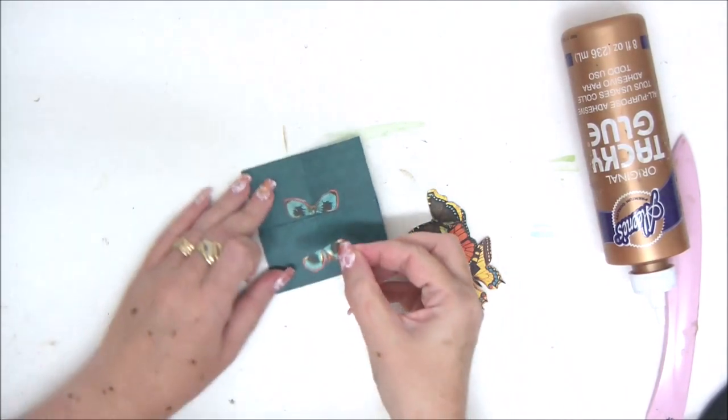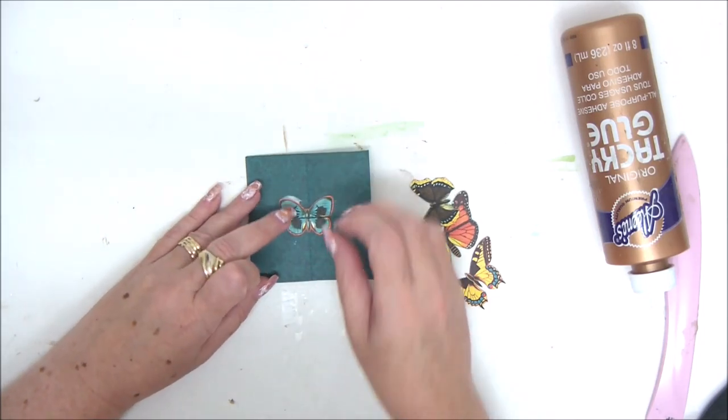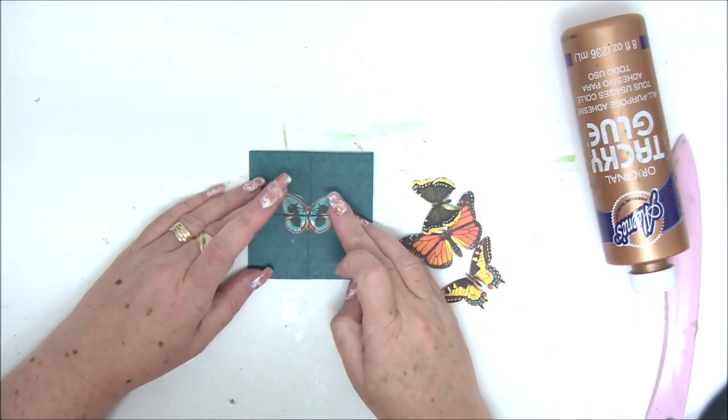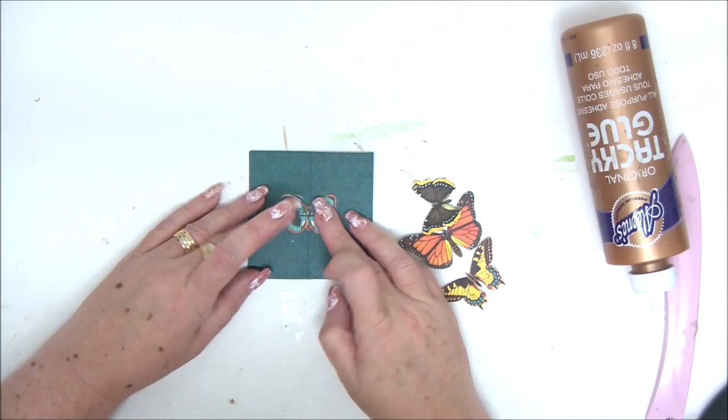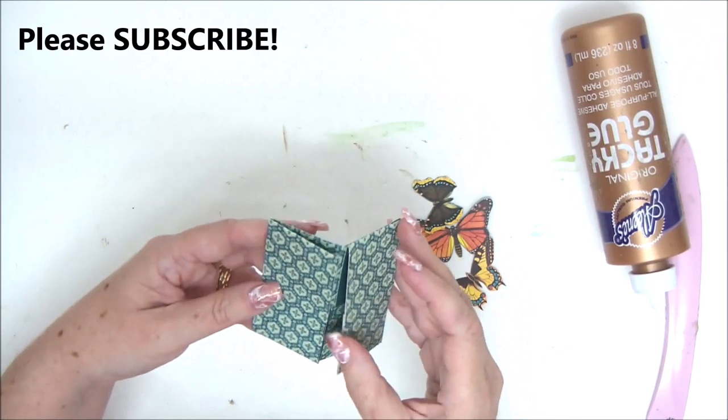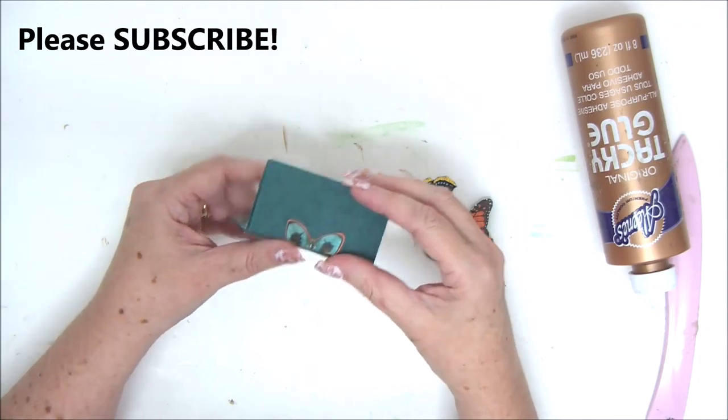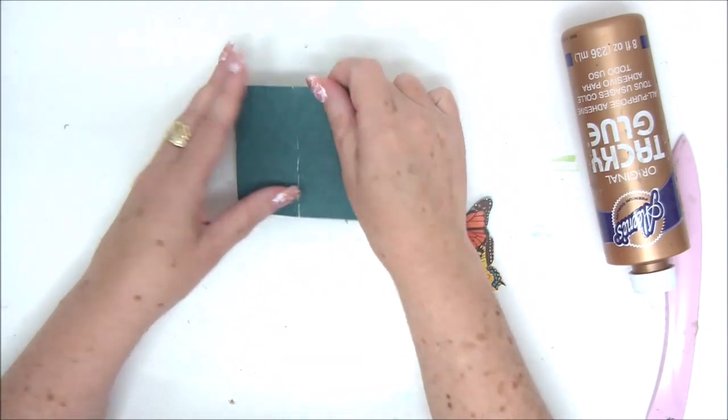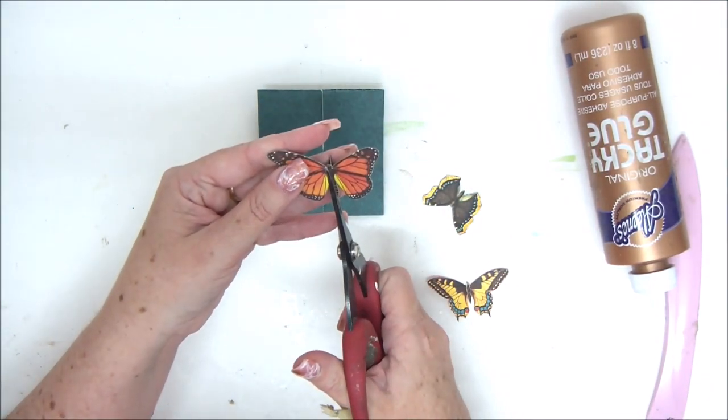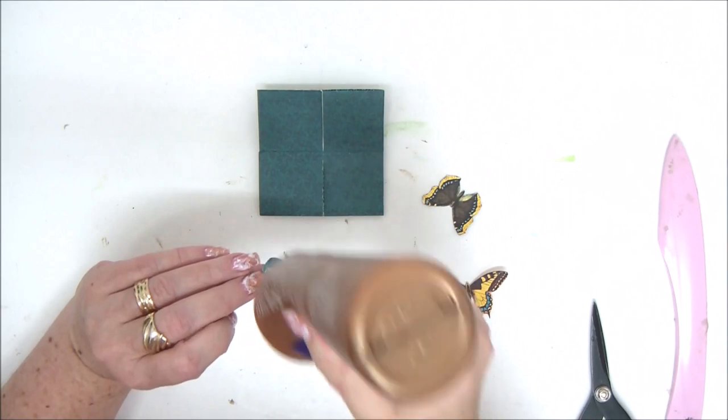So basically you cut the shape in half according to where it's supposed to go. For example this butterfly is horizontal. It's going to go where the card has a horizontal opening. So you cut the butterfly in half horizontally and you glue both sides of the butterfly to the paper. Next you fold it to its next position and this opening in the card is vertical. So you need to cut the butterfly in half vertically and attach both sides of the butterfly to the card.